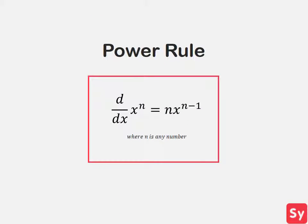Here is the power rule. It says the derivative of x to the n power is equal to n times x to the n minus 1, where n can be any number.